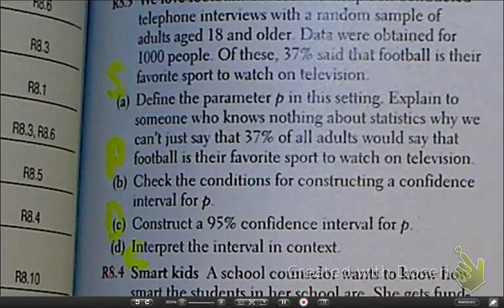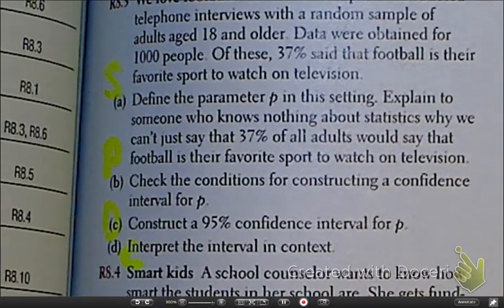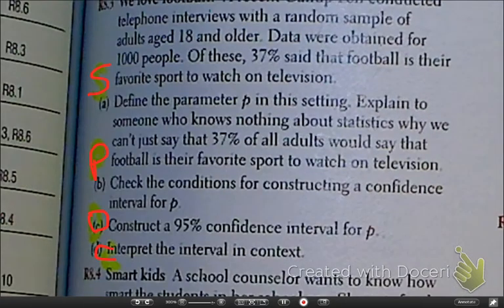I don't know how well you can see that, so let me try something. This is what I was saying: State the parameter. Plan, which means our conditions and assumptions. Do is when we do the math, the construction. And conclusion is answering the question, bringing it all together.